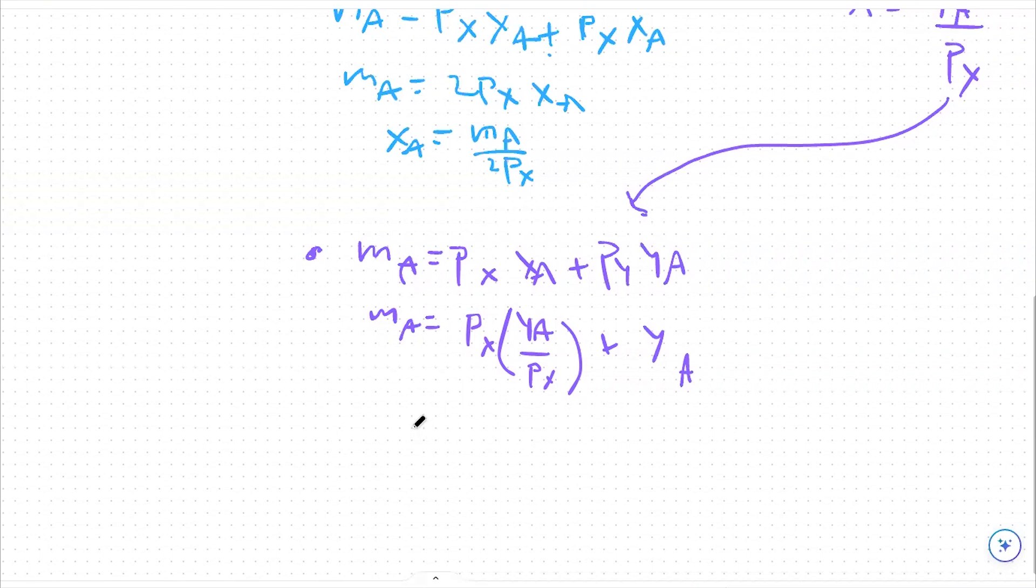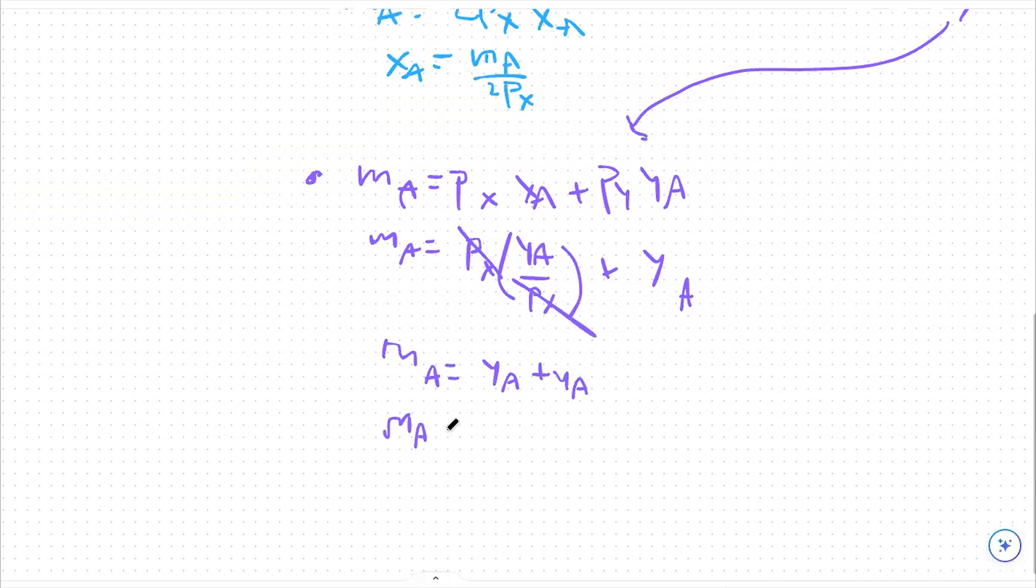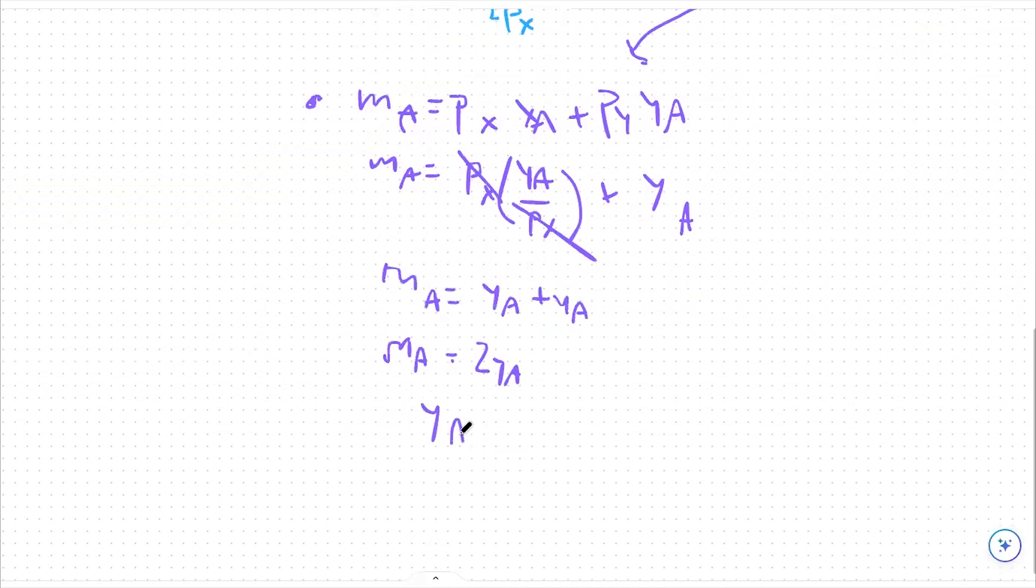From there, we can cross out these px's since they're multiplying on both the top and the bottom. And we can say MA is equal to yA plus yA. So MA is equal to 2YA. So from there if I want to solve for the optimal amount of yA, I can say yA is equal to MA over 2.